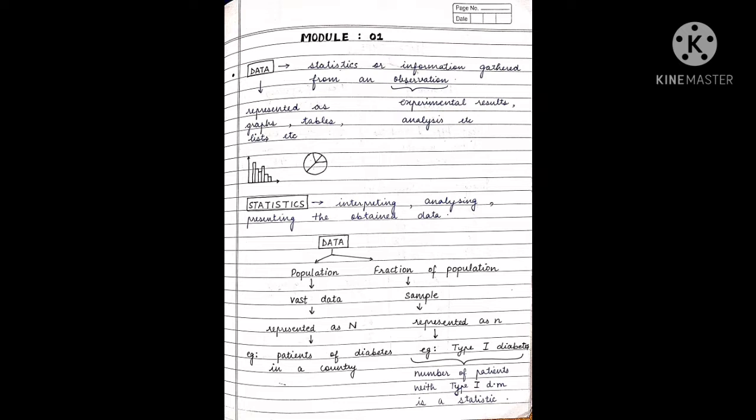For example, if we perform any experiment in a lab, the results we get are our information. We represent this in different forms like graphs, tables, lists, etc. When we interpret those data forms to get more specific values, those representative values that we get are called statistics.